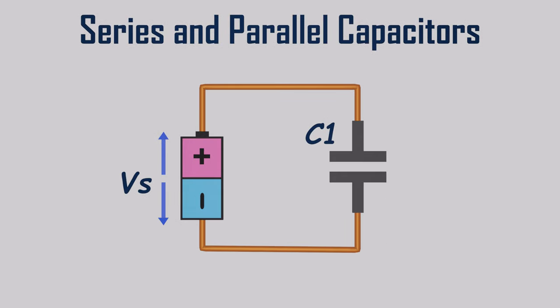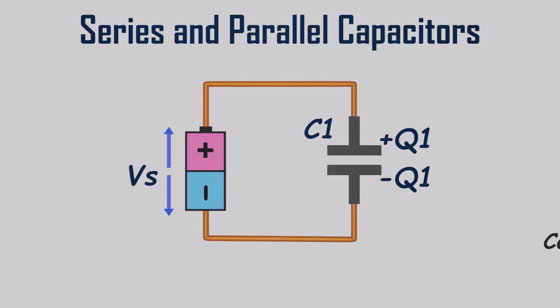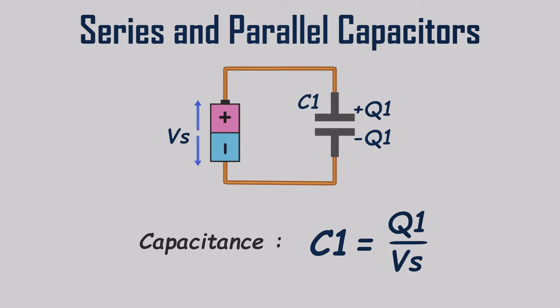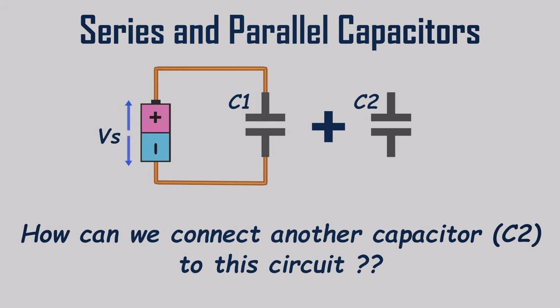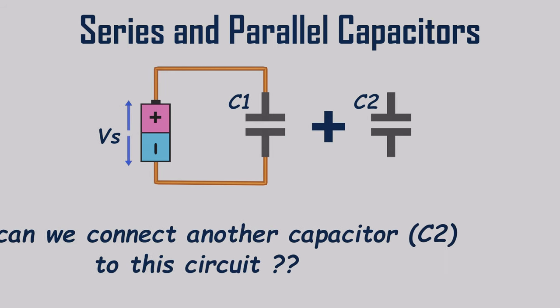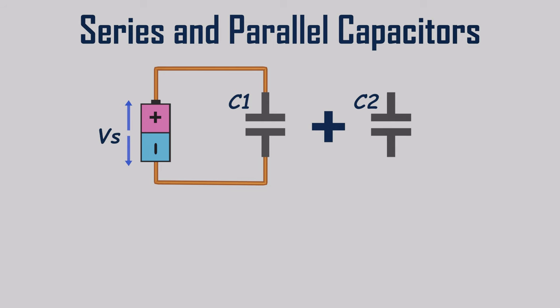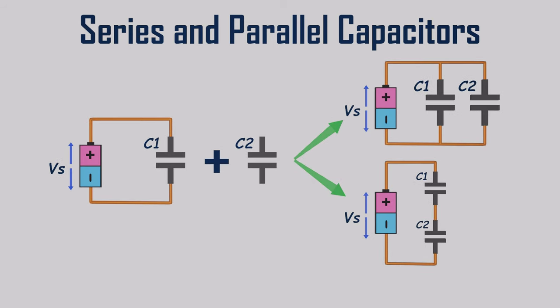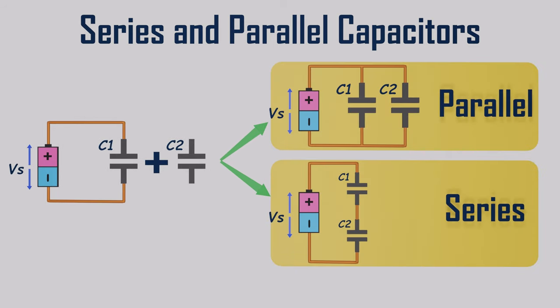We have a circuit where this capacitor needs Q1 amount of charge to reach the battery voltage VS. The capacitance of the circuit is given by the formula C1 = Q1 / VS. Now we need to add another capacitor to this circuit — we have two options: parallel or series connection. The total capacitance changes depending on the selected connection method.